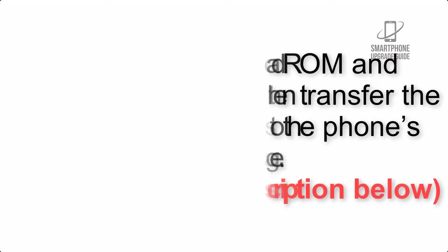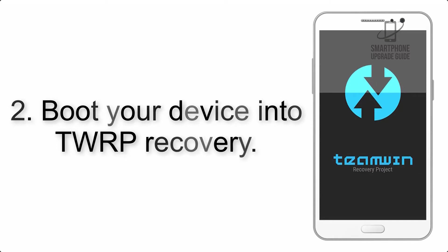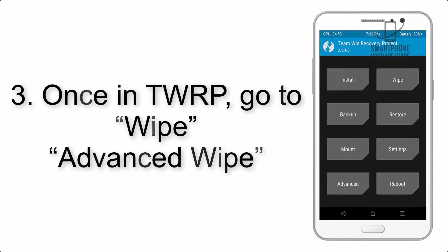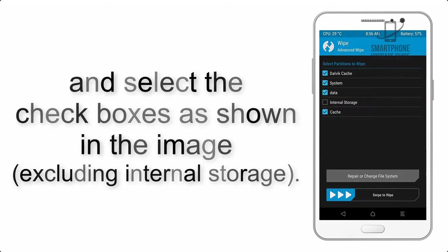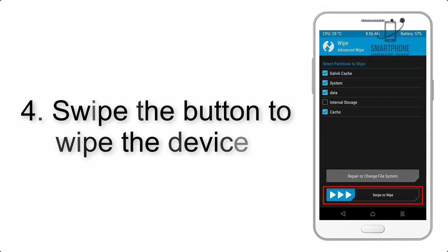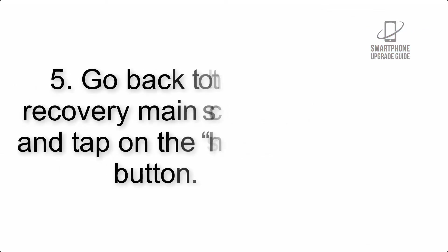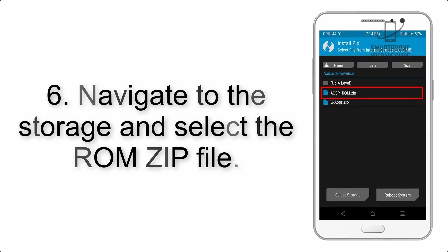Step 2: Boot your device into TWRP recovery. Once in TWRP, click on Wipe, then Advanced Wipe, and select the checkboxes as shown in the image, excluding internal storage. Step 4: Swipe the button to wipe the device. Step 5: Go back to the recovery main screen and tap on the Install button.